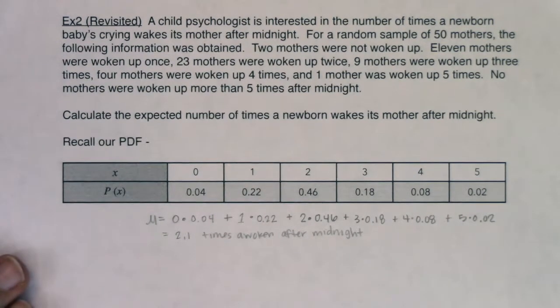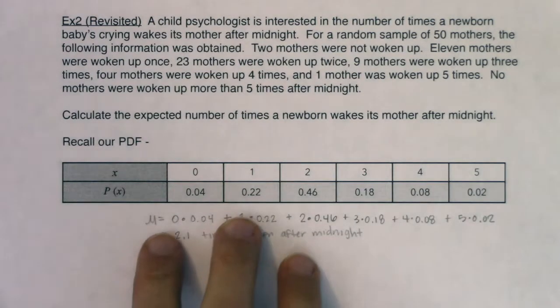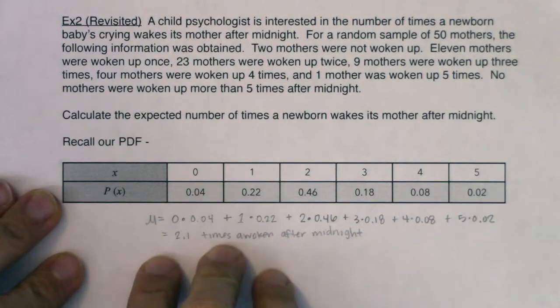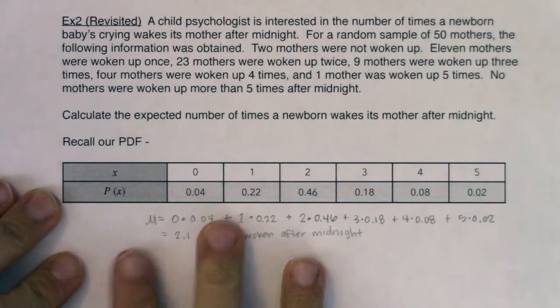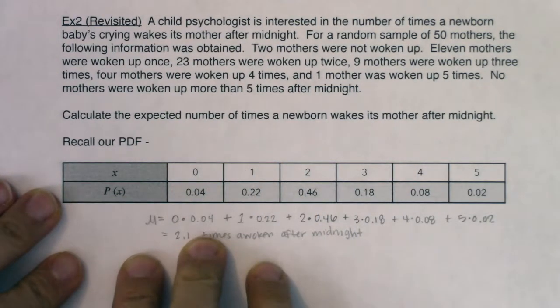Yes, I agree that no mom can be woken up 0.1 times, but this is still the numerical average. In most cases, the numerical average is not actually a possible number. I used to hear the statistic all the time - the average person has 2.4 kids. Nobody actually has 2.4 kids, but it's still the numerical average.